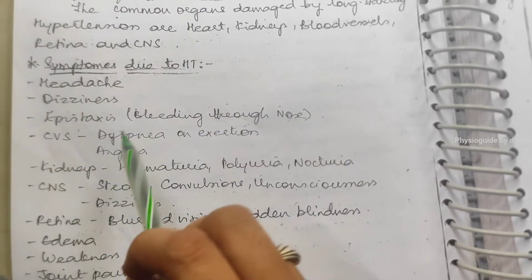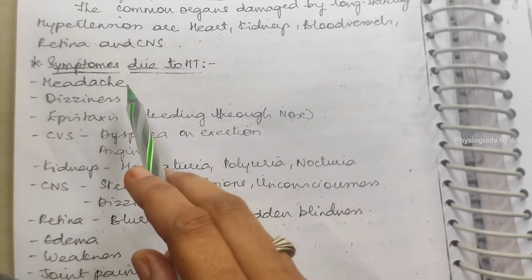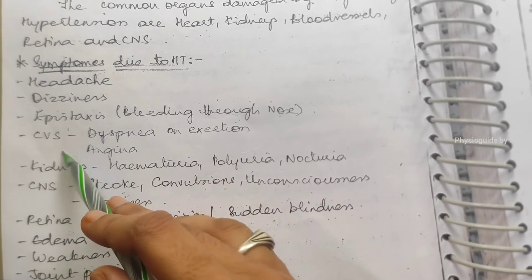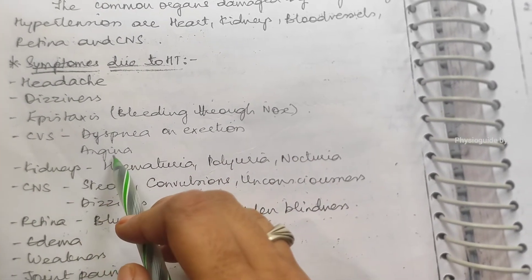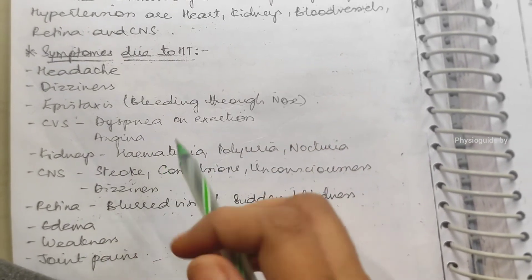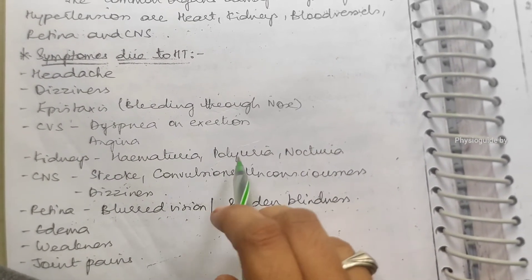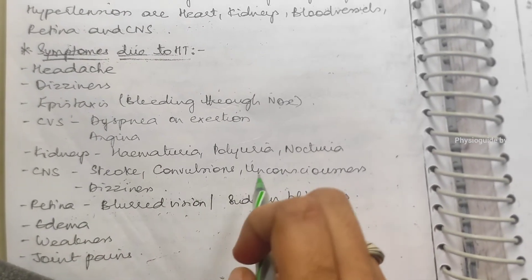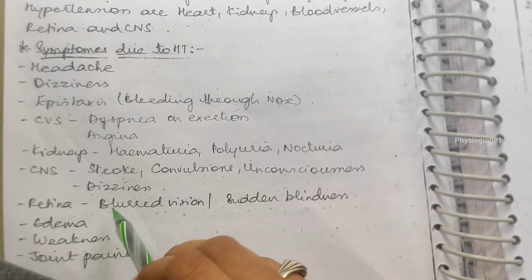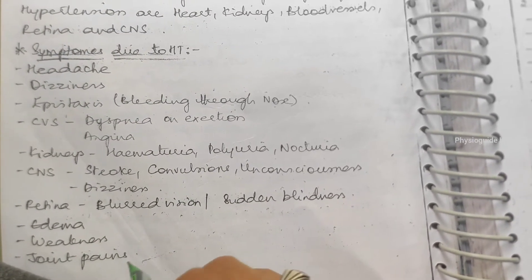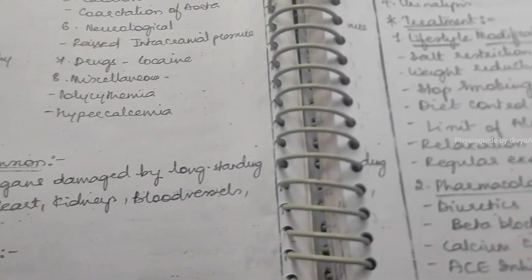What are the symptoms, the clinical features, signs and symptoms? Headache, dizziness, nosebleeding, and cerebrovascular system like angina and dyspnea on exertion. Kidneys also will be damaged like polyuria, nocturia. CNS stroke, convulsions, unconsciousness, dizziness. Retinal blurred vision, sudden blindness, edema, weakness, and joint pains are seen due to this hypertension.